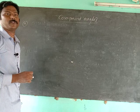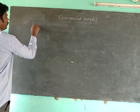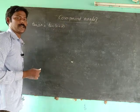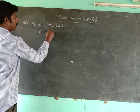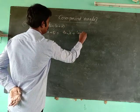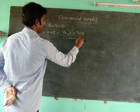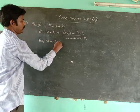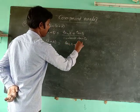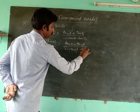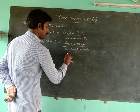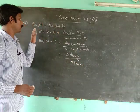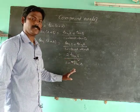Next, the 11th formula: tan(2a). Tan(2a) = tan(a+a). Applying tan(a+b) = (tana + tanb)/(1 - tana·tanb), with both a and b equal to a: tan(2a) = (tana + tana)/(1 - tana·tana) = 2tana/(1 - tan²a). This is the formula for tan(2a).